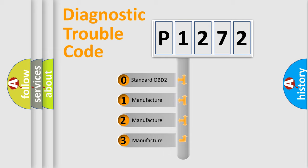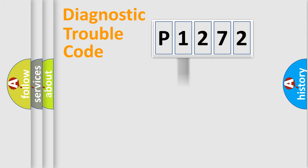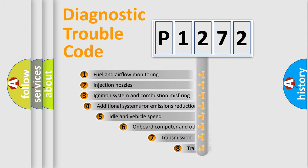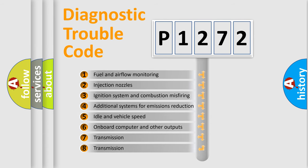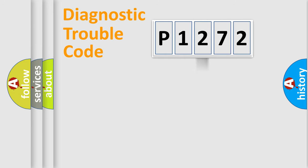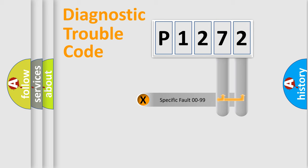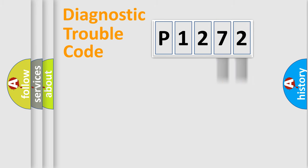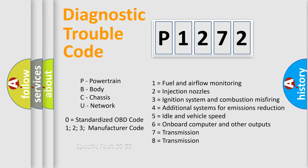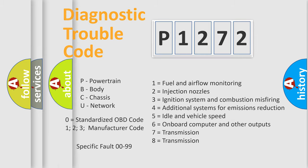If the second character is expressed as zero, it is a standardized error. In the case of numbers 1, 2, or 3, it is a more specific expression of a car-specific error. The third character specifies a subset of errors. This distribution is valid only for the standardized DTC code, and only if the second character is expressed by the number zero.